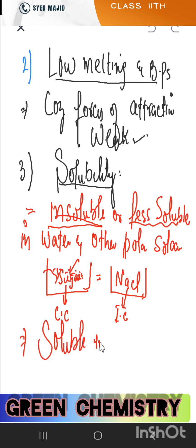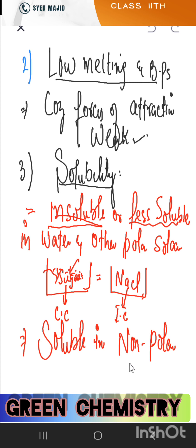Covalent compounds are soluble in non-polar solvents like ethylene, benzene, acetone, and toluene. So the three key properties so far are: physical state of existence, low melting and boiling points, and the solubility case.